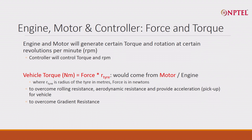A drive — engine or motor — in a conventional ICE vehicle will generate a certain torque and rotation at certain revolutions per minute. Torque will depend on what you need: road roughness, whether you are climbing, or whether you are accelerating — all require more torque. Rotation speed is measured most commonly in revolutions per minute, or RPM. The controller controls the torque and the RPM.